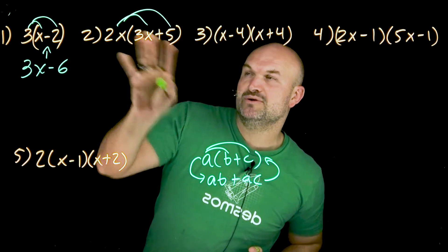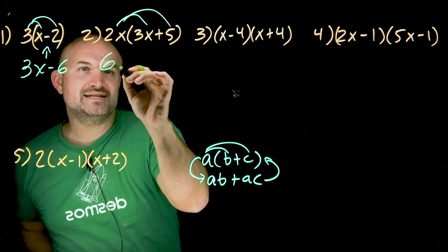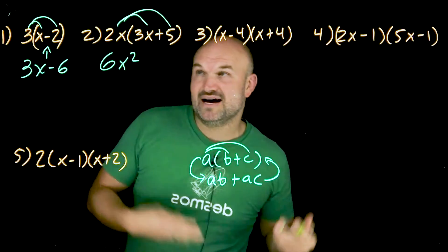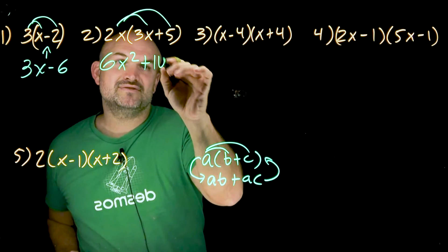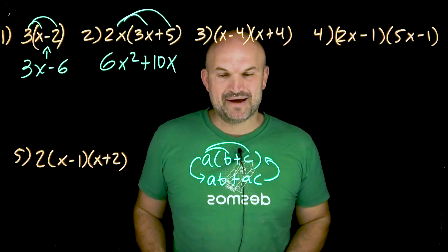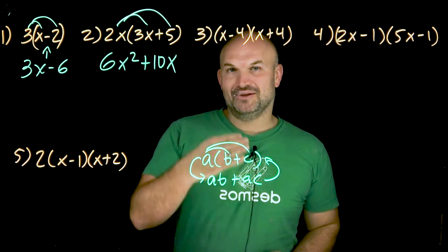Remember, numbers multiply by numbers, variables multiply by variables. So therefore this is going to be a six X squared and a two X times five. I can only multiply the five times a two. So it's going to be a positive 10 X. Now we get into a trinomial. I don't have anything for a trinomial here, but the distributed property still works.